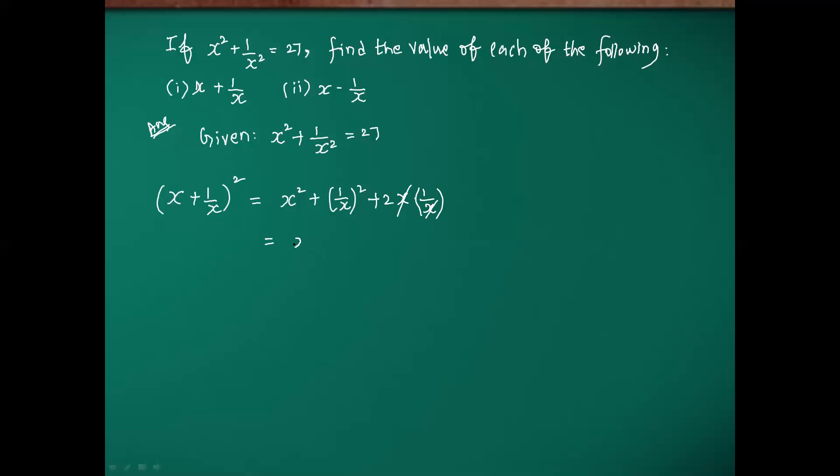Here we have x square, apply the power then 1 square the value 1, x square the value x square plus 2 into 1 is 2. What we need to find is x plus 1 by x the whole square. The whole square goes to opposite, it will come root for this mode.